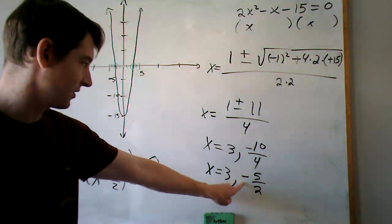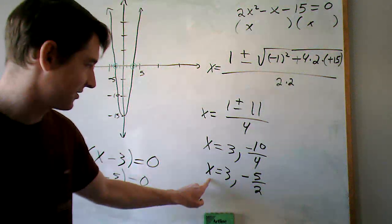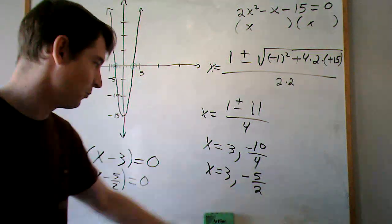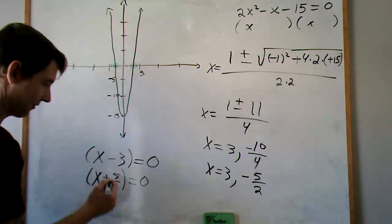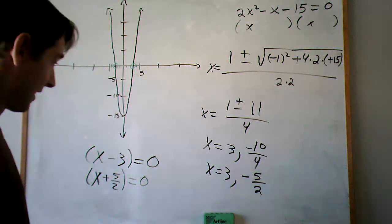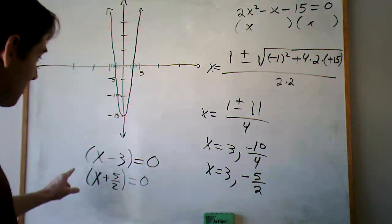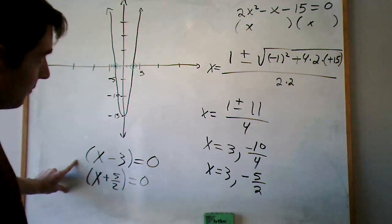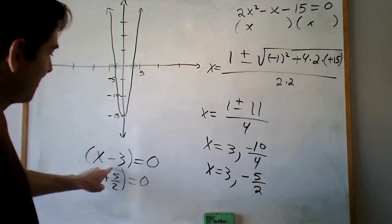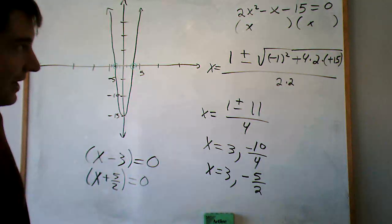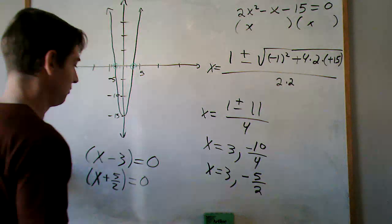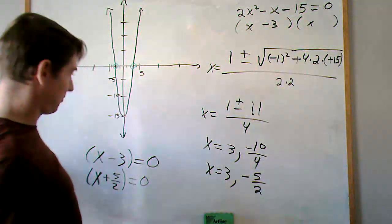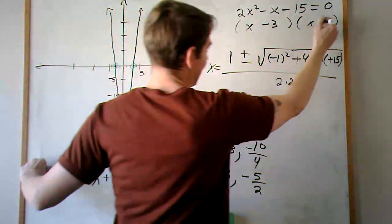We need a plus sign, so x equals 5 over 2. We need to add 5 over 2 to both sides. So I'm speculating that one thing we could do is x minus 3 times x plus 5 halves. So: x minus 3, and then x plus 5 halves.